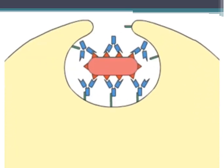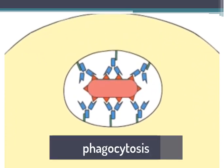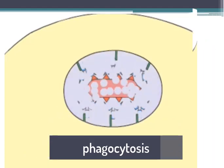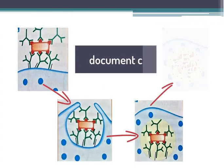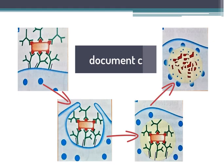The macrophage then engulfs the antibody-coated pathogen and digests it. You can refer to document C of your book to observe bacterial opsonization by antibodies.